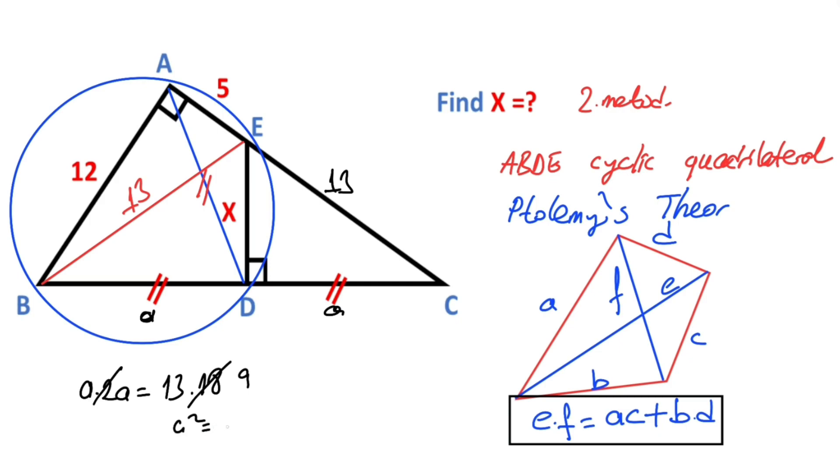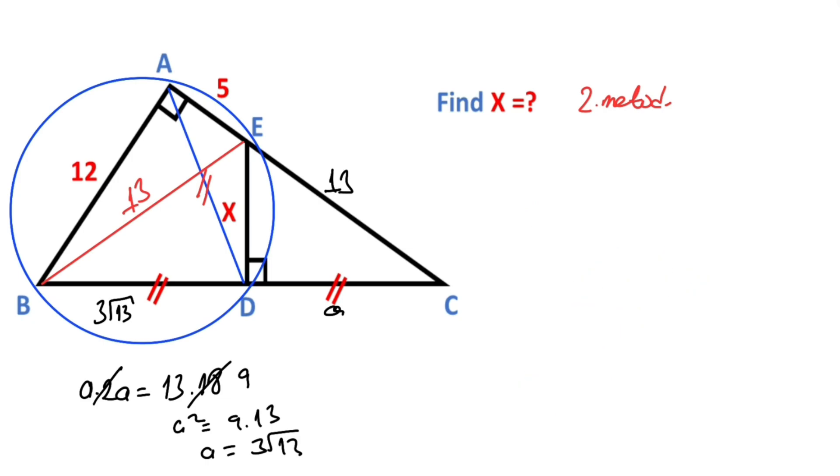Let's simplify the equation. Therefore, A squared equals 9 times 13. So A equals 3 root 13. And then let's write here, this side equals 3 root 13.